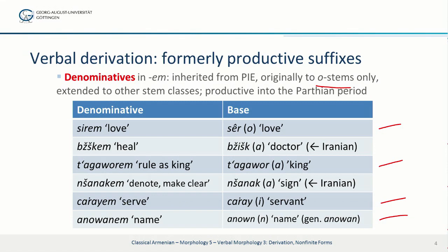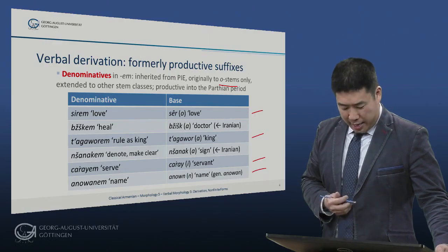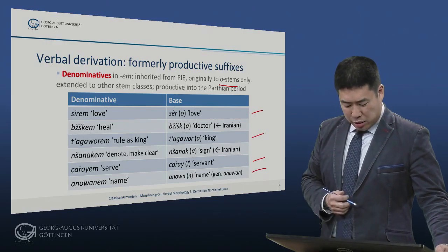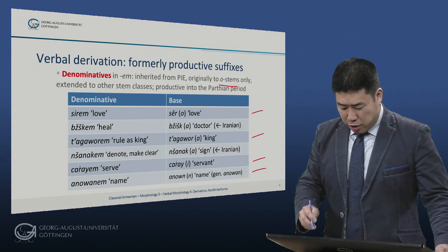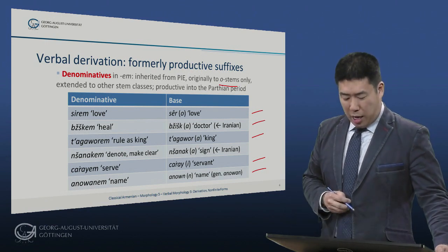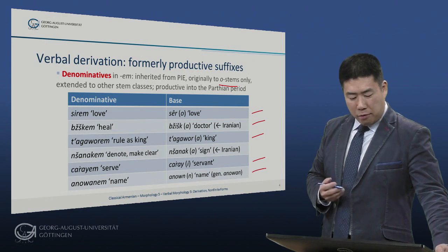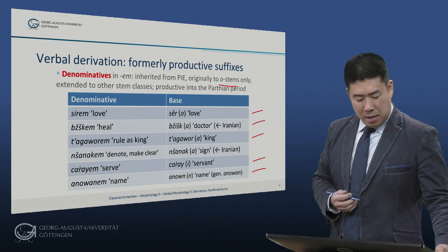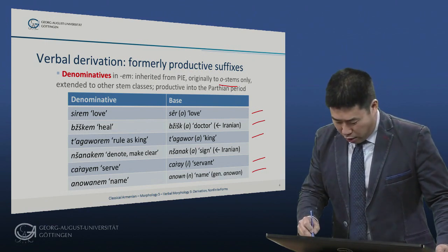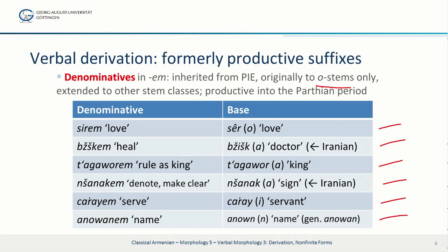Notice that the last three examples are stems that are not O-stems: respectively the A-stem tagawar, the E-stem tsarai, and the N-stem anun. In addition, we have bzishk 'doctor,' an Iranian borrowing, from which is formed bzishkem 'I heal.' We also have the borrowing neshanak 'sign,' and neshanakem 'I denote, I make clear with a sign.'